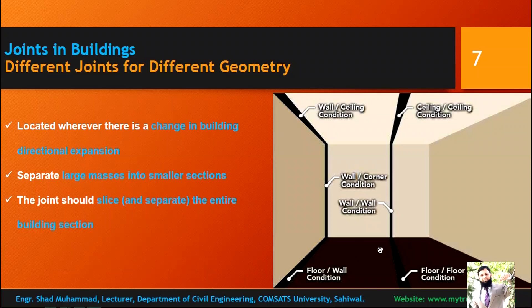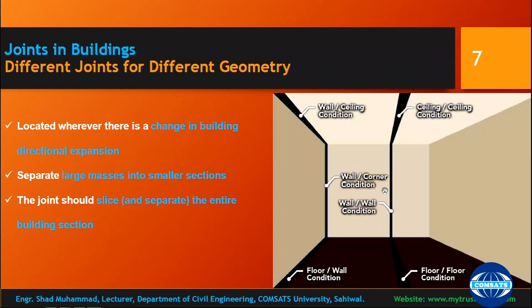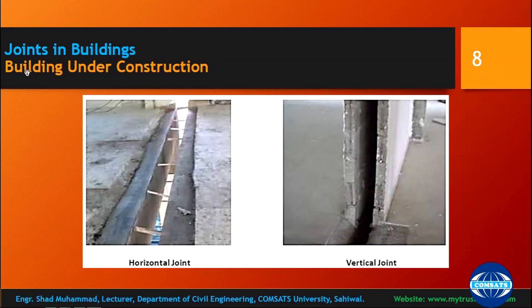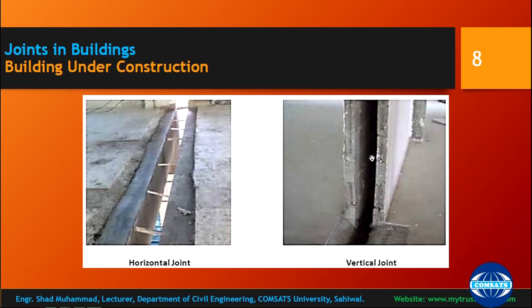When you have provided a construction joint, you can also provide a covering material to hide the vertical joint. Joints in buildings include horizontal joints between slabs and between two structures, and vertical joints. Sometimes you need to provide expansion joints, sliding joints, and contraction joints. This is an under-construction building showing a horizontal joint between slabs and a vertical joint — a covering material can be used to conceal the construction joint.